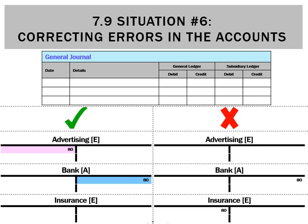So how are we going to do that? First, this doesn't fit in any of the other journals, so it's going to have to go in the general journal. We're going to do a debit to advertising of $80, and that'll get the accounts on the right to look like the one on the left. The bank ledger is okay — it should have a credit of $80 and it does. The other one we're going to need to fix is insurance, which should actually have a zero balance. At the moment it's got a debit of $80, so there's an incorrect amount of $80 and we've got to get this ledger back to zero.